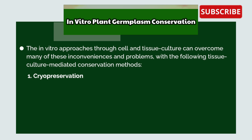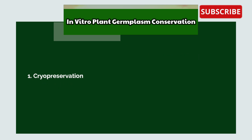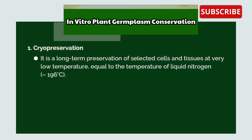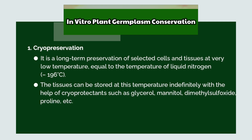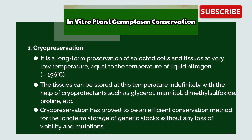1. Cryopreservation and 2. Cold Storage. Cryopreservation is the long-term preservation of selected cells and tissues at very low temperatures equal to the temperature of liquid nitrogen, at minus 196 degrees Celsius. The tissues can be stored at this temperature indefinitely with the help of cryoprotectants such as glycerol, mannitol, DMSO (dimethyl sulfoxide), proline, etc. Cryopreservation has proved to be an efficient conservation method for the long-term storage of genetic stocks without any loss of viability or mutations.